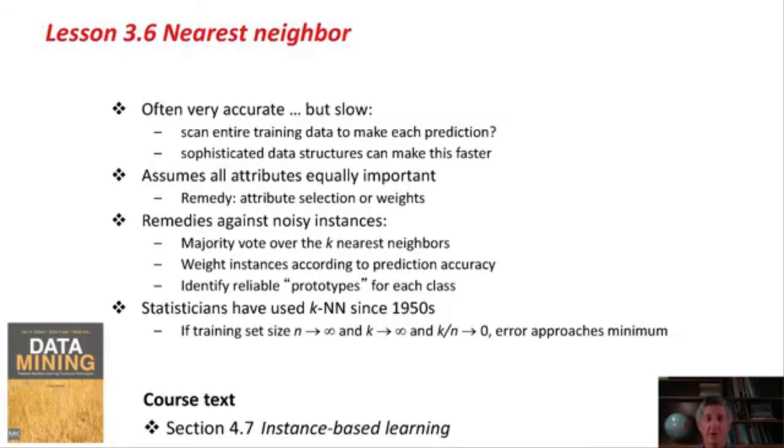If we've got noisy instances, then we can use a majority vote over the k nearest neighbors, or we might weight instances according to their prediction accuracy. We might try and identify reliable prototypes, one for each of the classes. This is a very old method. Statisticians have used k nearest neighbors since the 1950s, and there's an interesting theoretical result that if the number of training instances approaches infinity, and k also gets larger in such a way that k over n becomes 0, but k also approaches infinity, the error of the k nearest neighbor method approaches the theoretical minimum error for that data set. So there's a theoretical guarantee that with a huge data set and large values of k, you're going to get good results from nearest neighbor learning.